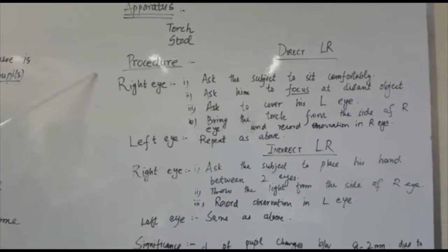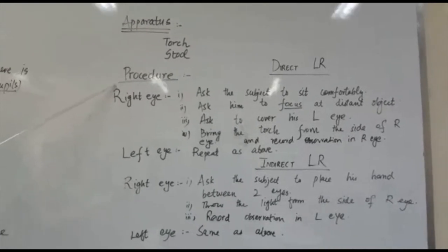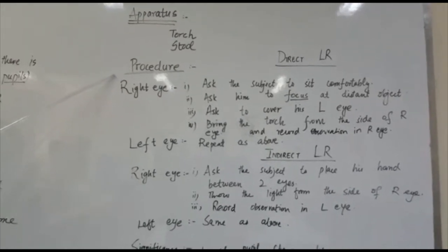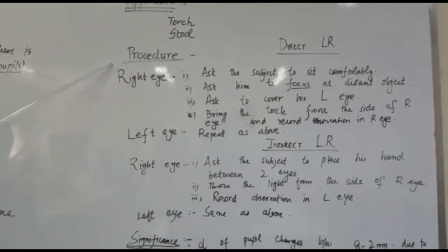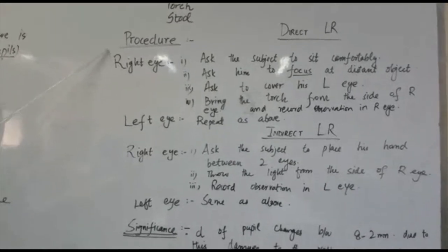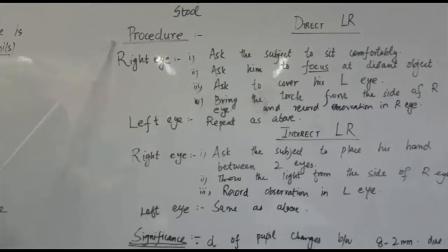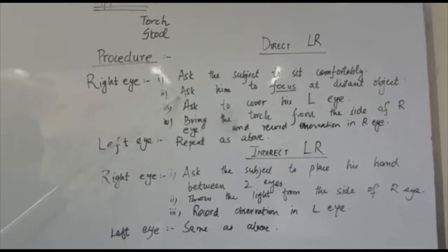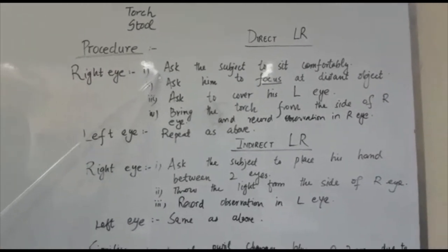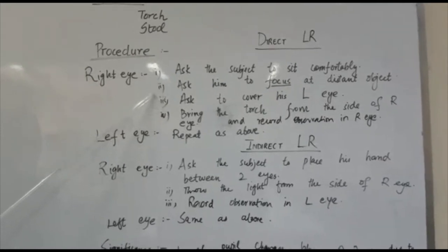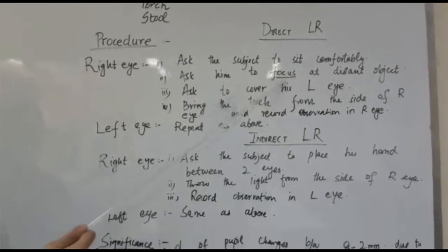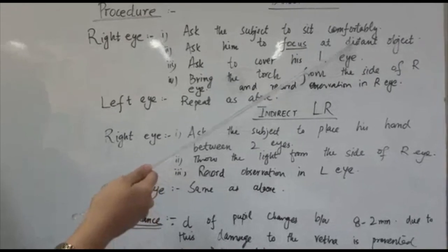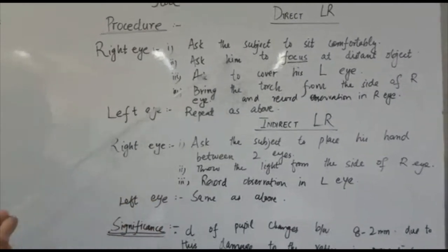Proceeding to the procedure, first three steps that I have already told you in the form of introduction, consent, and explanation of the procedures are a must. After this, to perform the direct light reflex, you will ask the subject to sit comfortably on the stool. Then you will ask him to focus at some distant object.